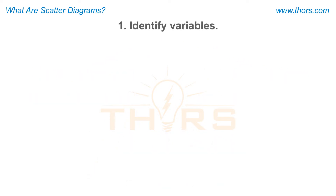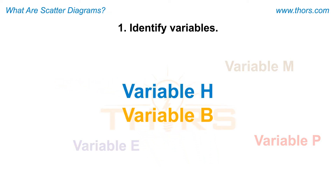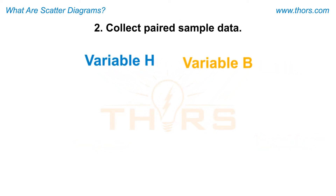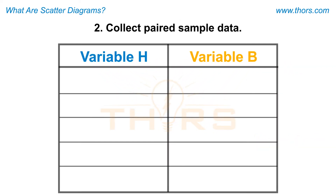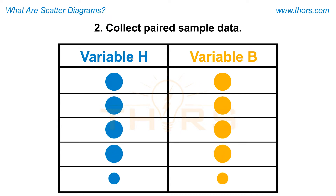In an effort to understand if variables in a process have a relationship, the first step is to identify two variables that are suspected to exhibit a relationship. Then, the paired sample data are collected. In other words, for every value of the independent variable, or process characteristic, a corresponding value for the dependent variable, or product characteristic, is generated.